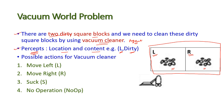The possible actions for the vacuum cleaner are: move left, move right, suck, and no operation. These four are the possible operations of this vacuum cleaner. The purpose of this vacuum cleaner agent is to suck the dirt.